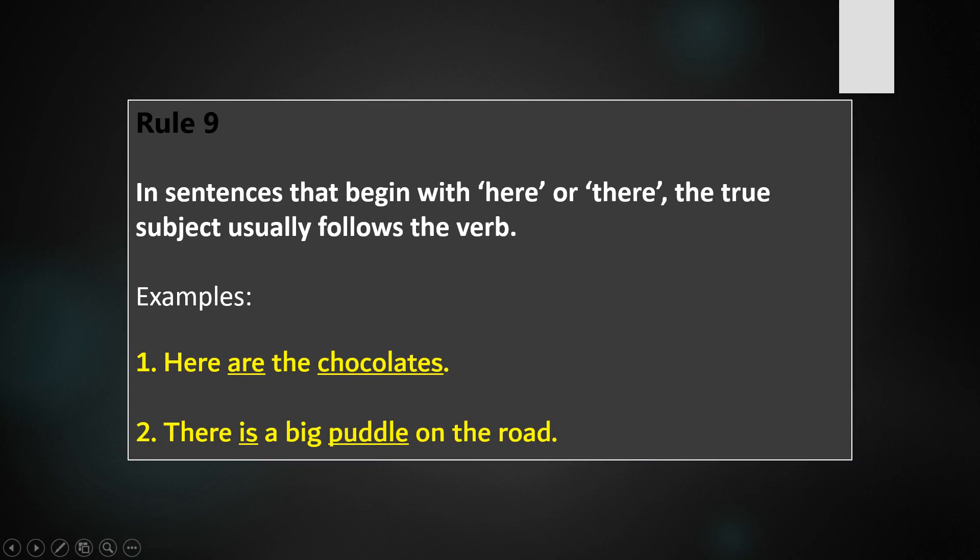Rule 9: In sentences that begin with here or there, the true subject usually follows the verb. For example: Here are the chocolates. There is a big puddle on the road. In both sentences, the verb appears before the subject.